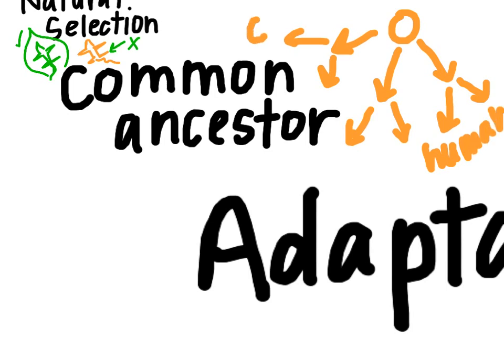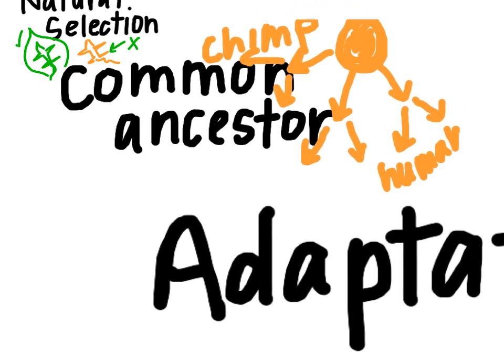Now, the human didn't come from the chimp, and the chimp didn't come from the human. They both came from a common ancestor — some kind of combination of the two — because that common ancestor gave some of its traits to the chimp and some of its traits to the human. That's the idea of a common ancestor.